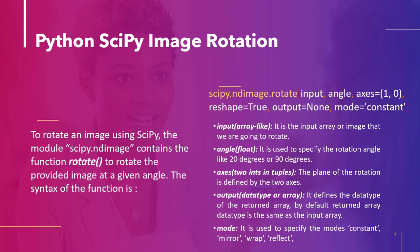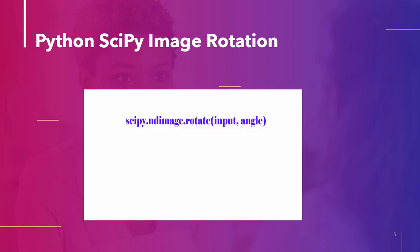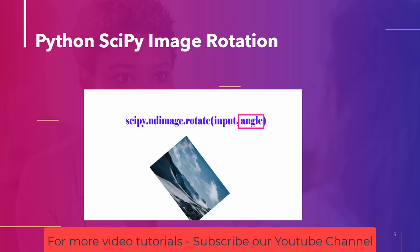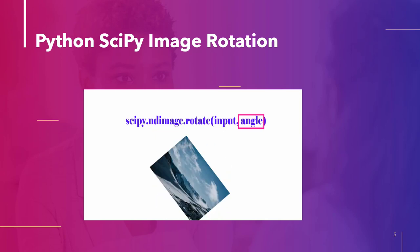Mode: it is used to describe the modes such as constant, mirror, wrap, and reflect. The two most important parameters of the rotate method are input, which represents the image in the form of an array, and the angle to rotate that image. Using these two parameters we will rotate the image at the desired angle.